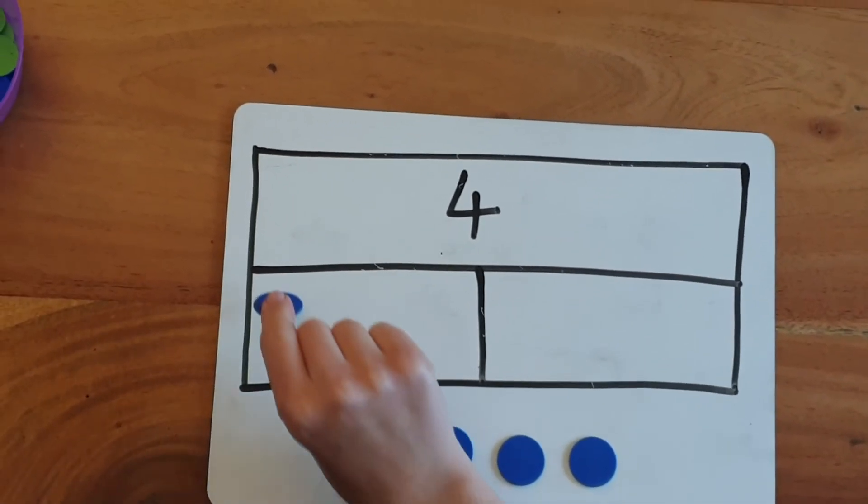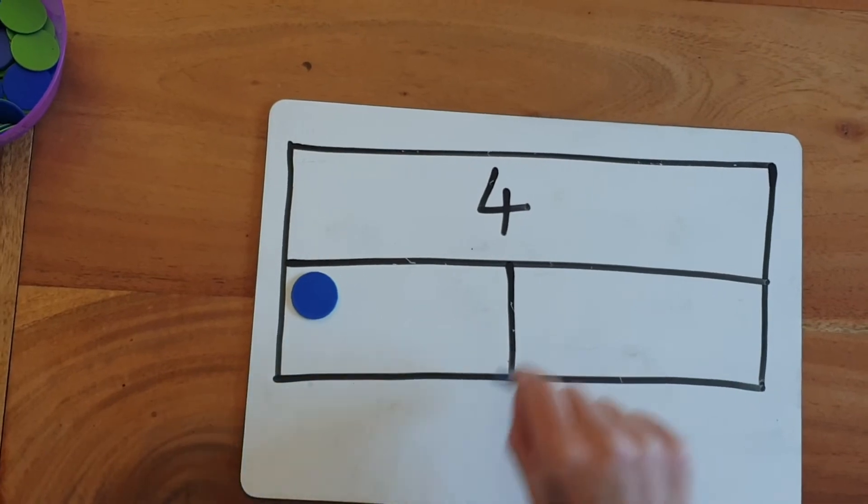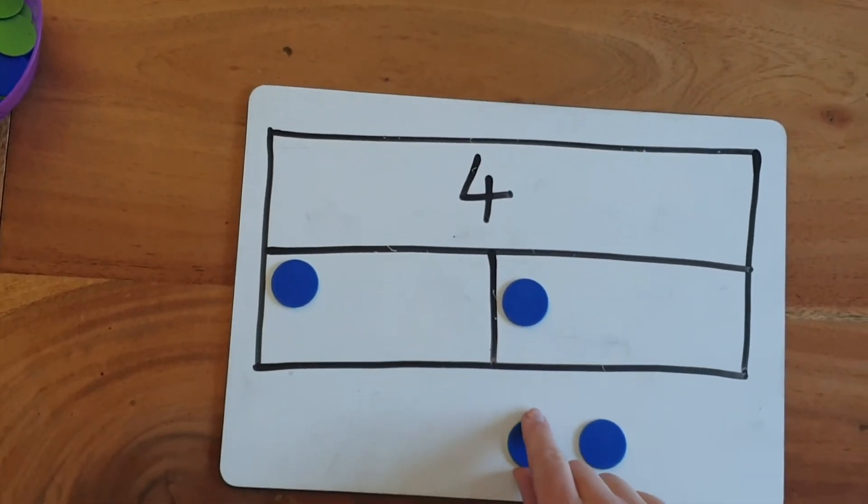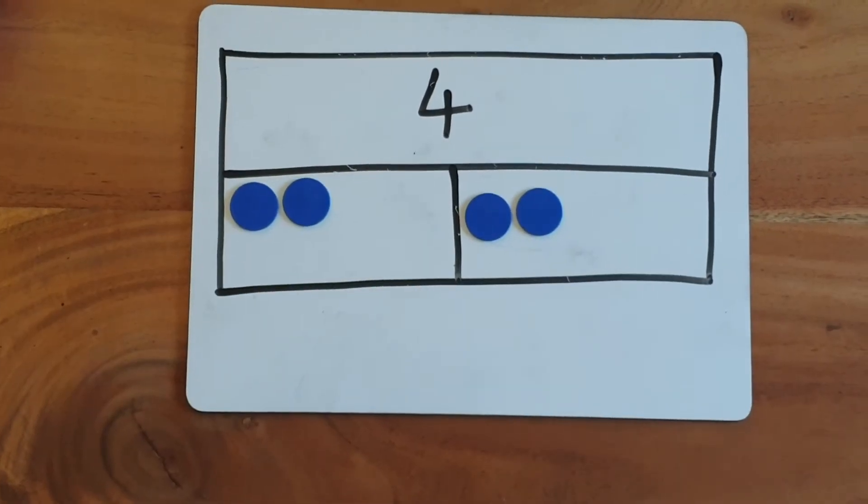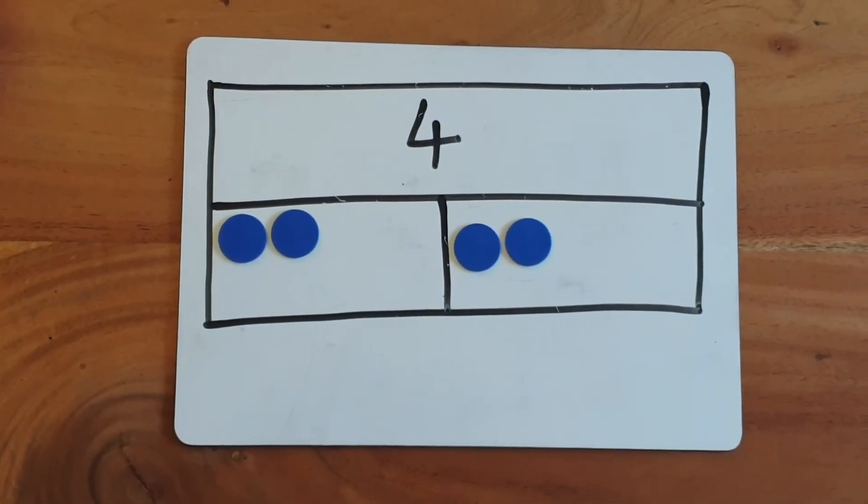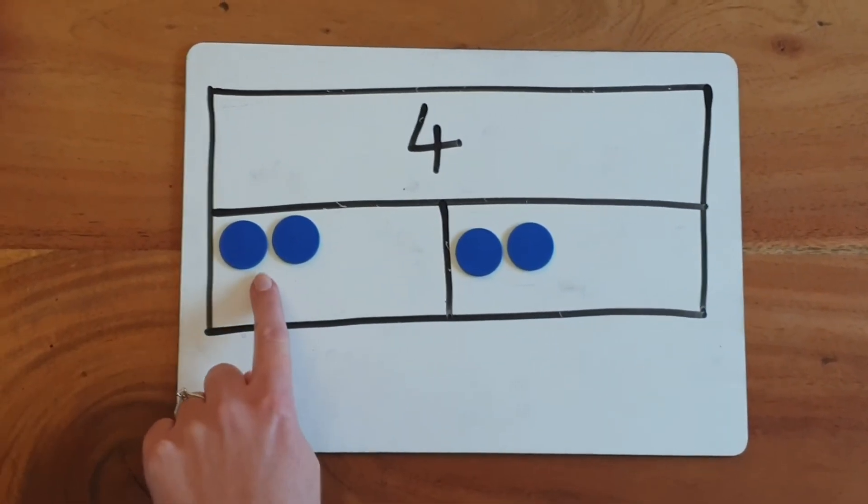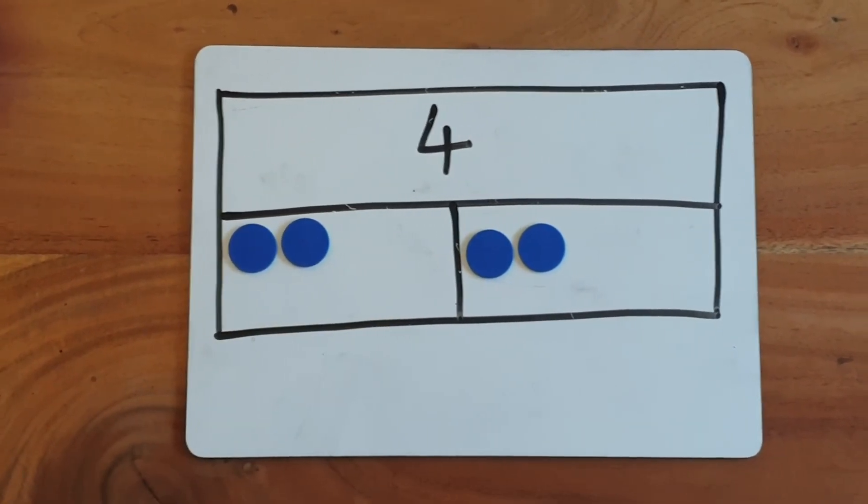I'm going to put one on this side, then one on the other side. One on this side, then one on the other side. We can now see that we have got two counters here and two counters here.